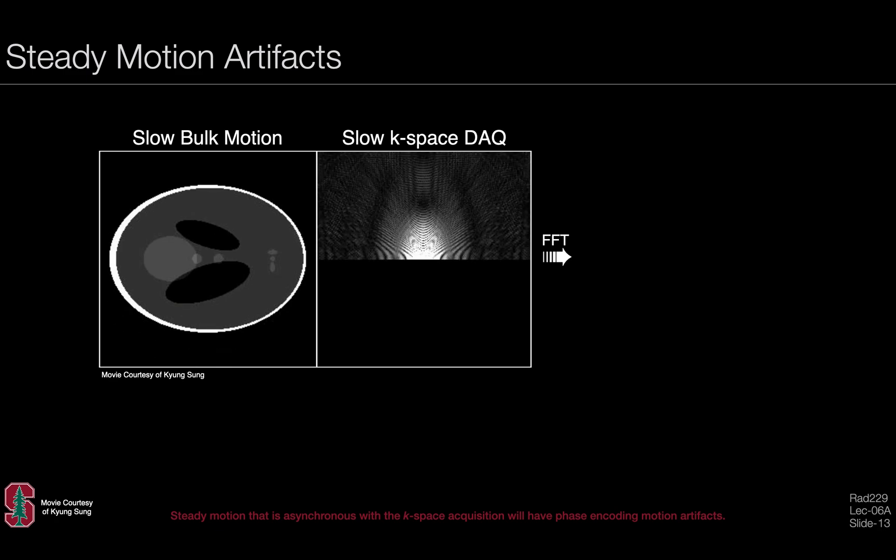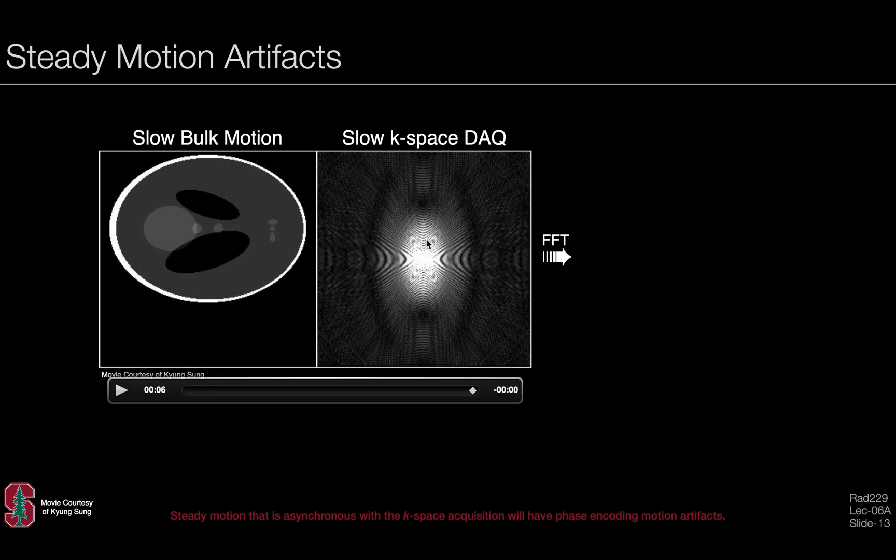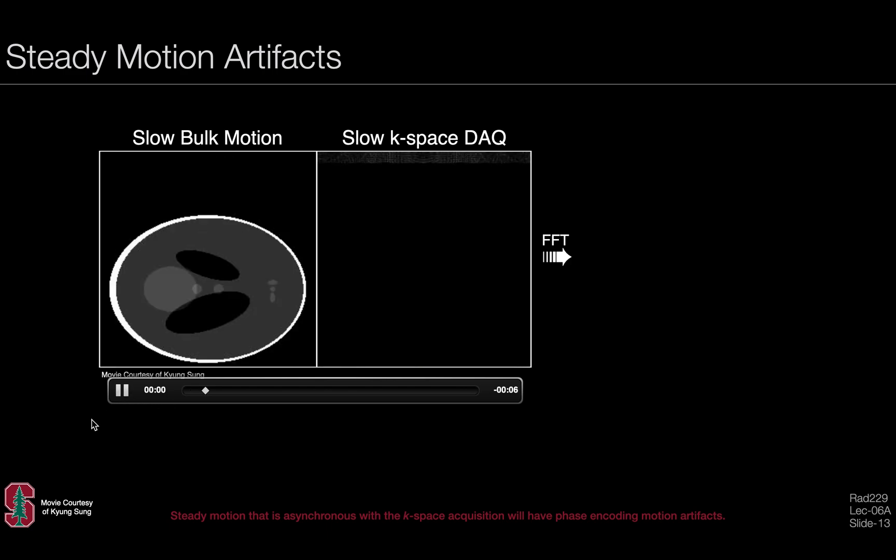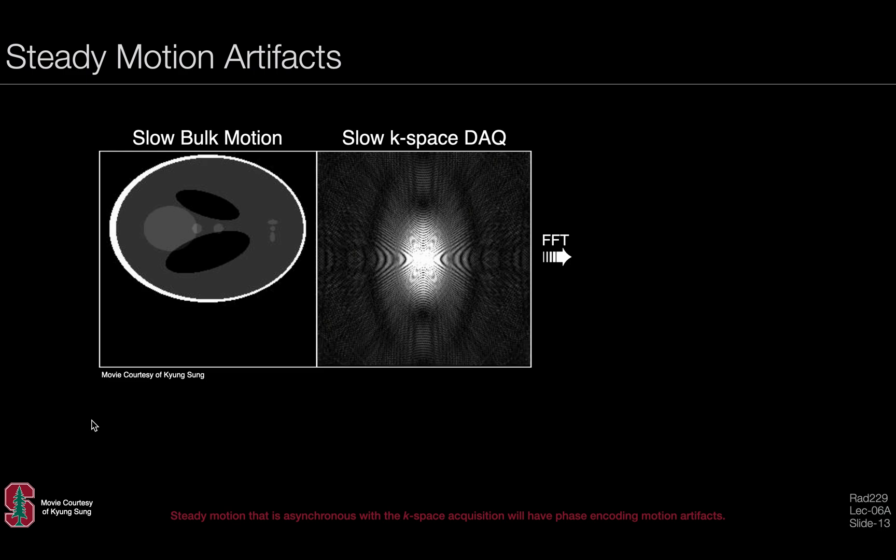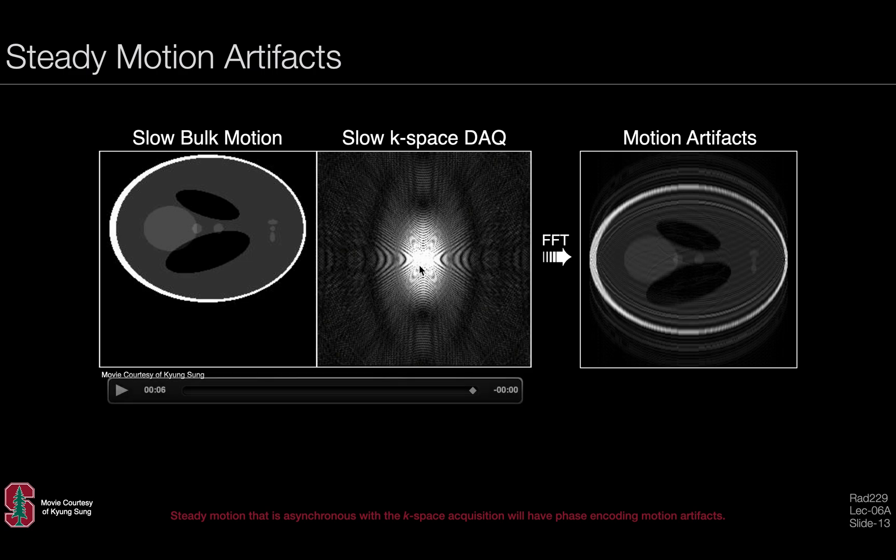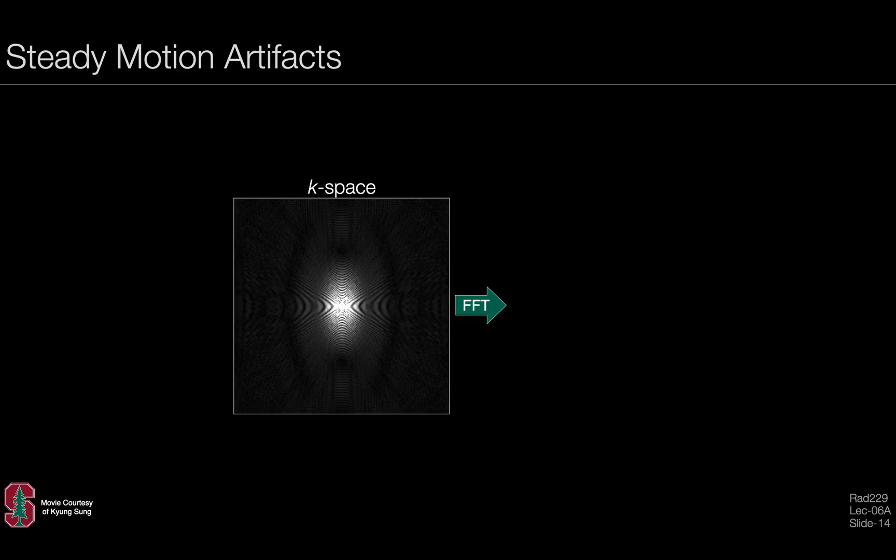Why does this happen? Here's a nice example. This movie was lent to me by Kyung Sung at UCLA. On the left-hand side, we have an object that's undergoing slow bulk motion. On the right-hand side, we have a k-space trajectory. Imagine that this object is moving while the data is being acquired, and the k-space trajectory is such that we're filling from the top of k-space to the bottom of k-space. Watch again as the object moves up and the k-space acquisition moves from top to bottom, so they're in opposition to one another. If we take the Fourier transform of the acquired k-space data during object motion, we get an image with clear and distinct motion artifacts that obscure information or your ability to see features in the underlying object.